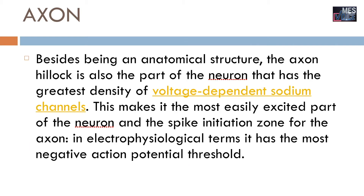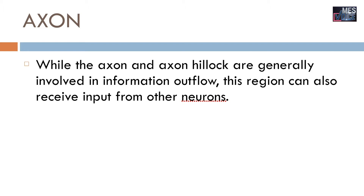Besides being an anatomical structure, the axon hillock is also the part of the neuron that has the greatest density of voltage-dependent sodium channels. This makes it the most easily excited part of the neuron and the spike initiation zone for the axon. In electrophysiological terms, it has the most negative action potential threshold — this is the point where impulse transmission begins. While the axon and axon hillock are generally involved in information outflow, this region can also receive input from other neurons.